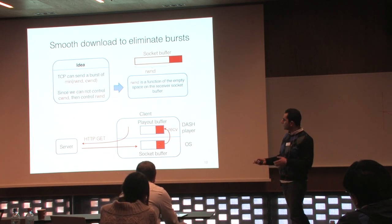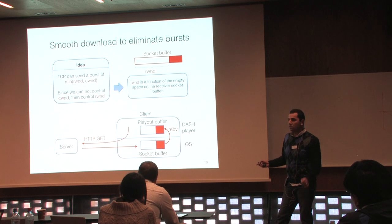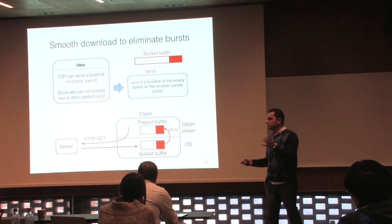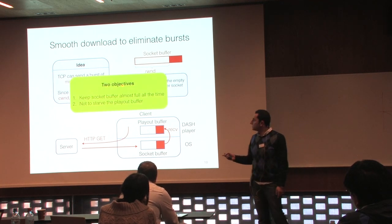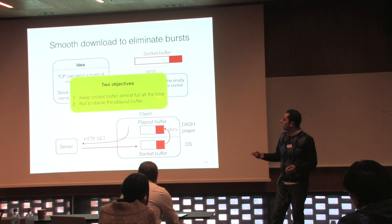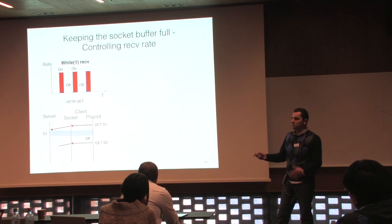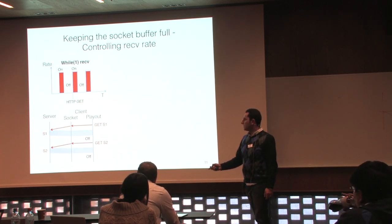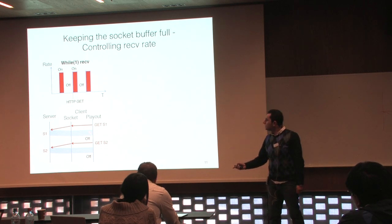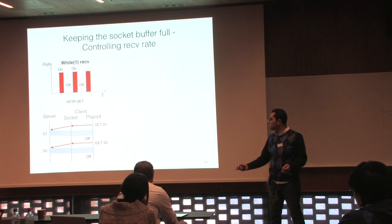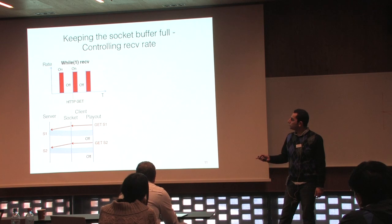The receive call drains data from the socket buffer. To keep the socket buffer full, reduce the receive call rate to a minimum. But the receive call also fills the playout buffer, so reducing it too much starves the playout buffer. We need a balance: keep the socket buffer almost full while not starving the playout buffer. In traditional DASH there's an on-off pattern — during the off period the socket buffer empties, so when you send the next GET, RWind is at its maximum, causing large bursts. Maybe we should get rid of these off periods.